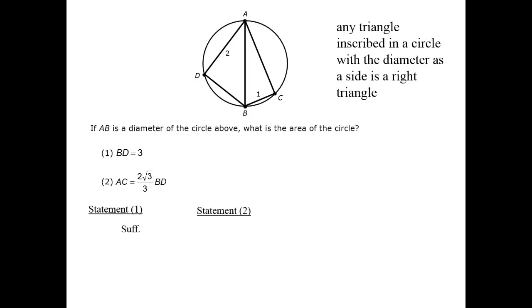Statement 2 gives us one of the missing sides in terms of the other missing side. This may seem insufficient at first blush, but let's consider the N equations and variables rule. By the Pythagorean theorem, we have two equations for the two triangles.